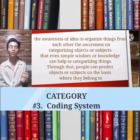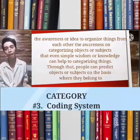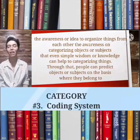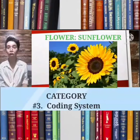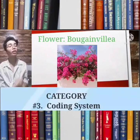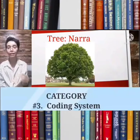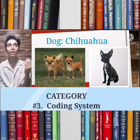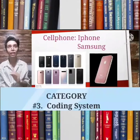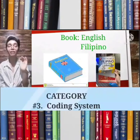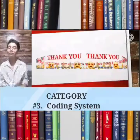The awareness to organize and categorize things means that even simple knowledge can help in recognizing things, and people can predict or classify objects based on where they belong. For example, a child would know it is a flower before knowing it is a sunflower or a bougainvillea. A child would know it is a tree before knowing it is a narra tree. A child would know it is a dog before knowing it is a Chihuahua. A child would know it is a cell phone before knowing it is an iPhone or Samsung. A child would know it is a book before knowing it is a Filipino or English book.